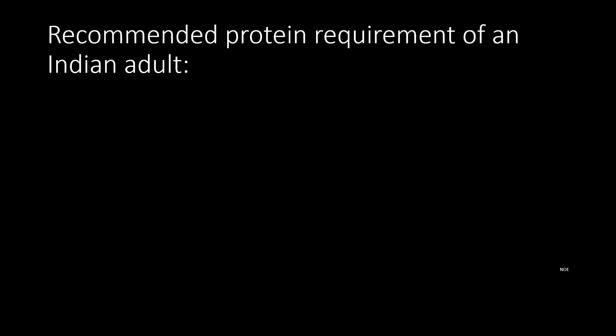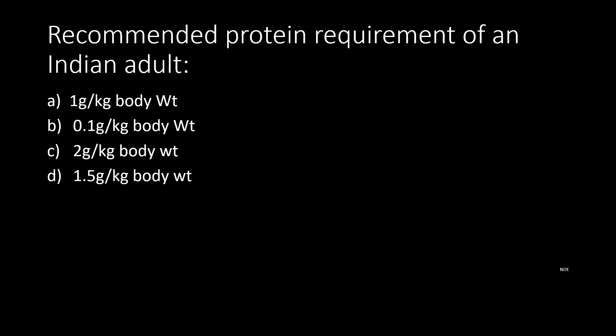Recommended protein requirement of an Indian adult is: option A 1 gram per kg body weight, option B 0.1 gram per kg body weight, option C 2 gram per kg body weight, option D 1.5 gram per kg body weight. The answer is 1 gram per kg body weight.